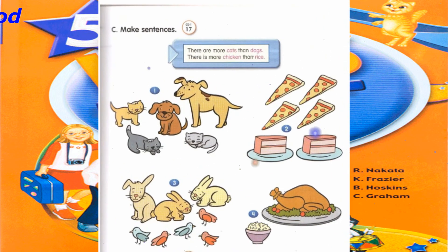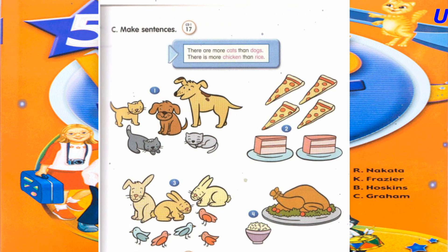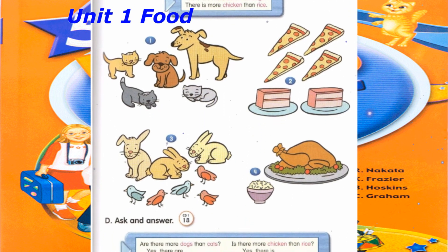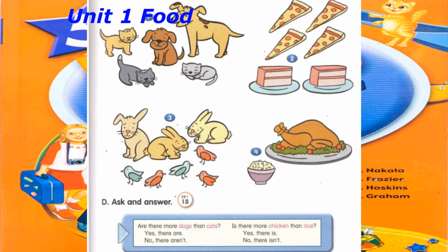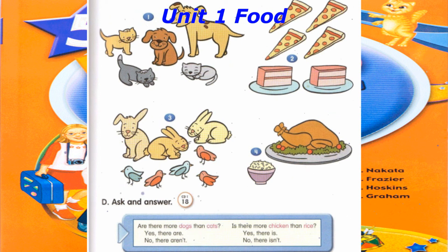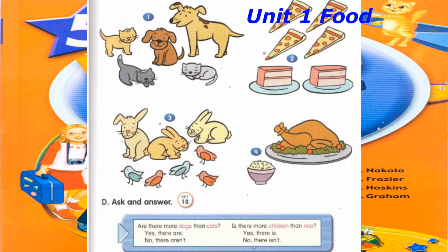Track 17. C. Make sentences. There are more cats than dogs. There is more chicken than rice. Track 18. D. Ask and answer. Are there more dogs than cats? Yes, there are. Are there more dogs than cats? No, there aren't. Is there more chicken than rice? Yes, there is. Is there more chicken than rice? No, there isn't.